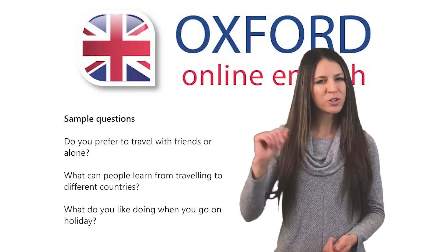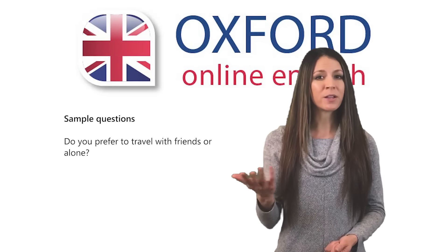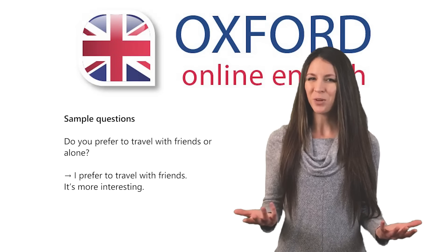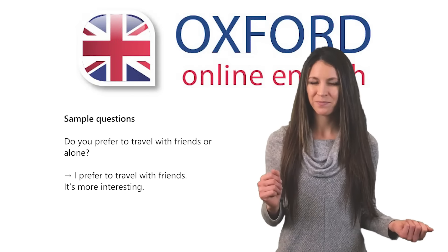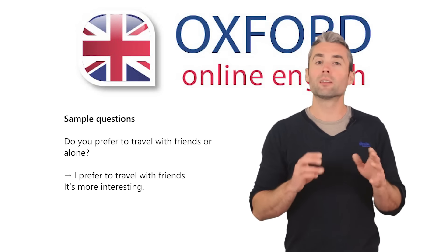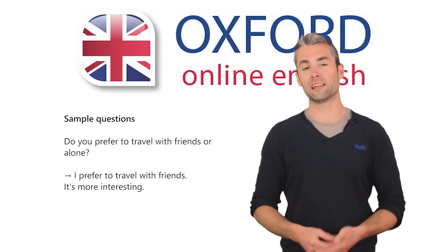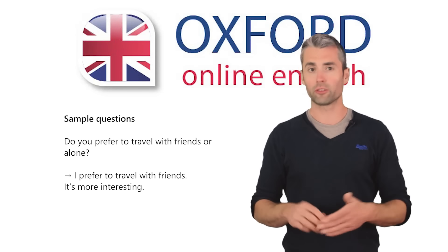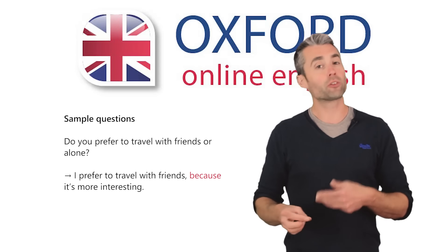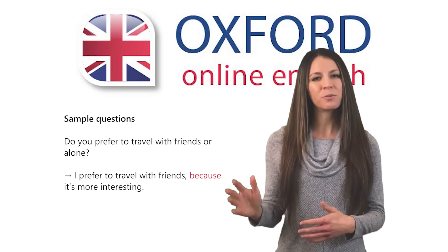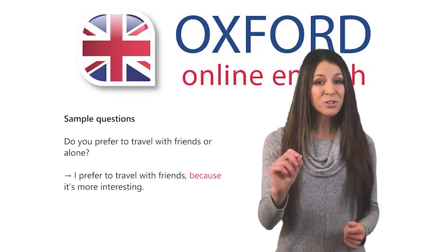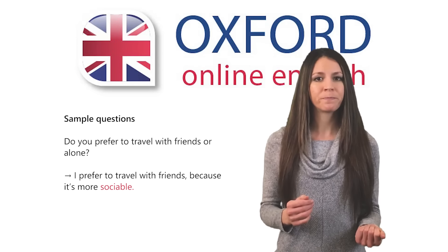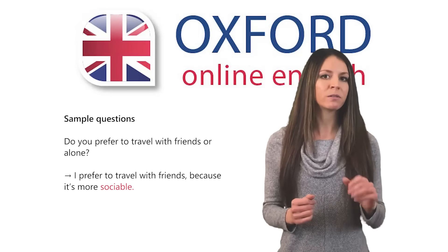Think — how could you answer these questions? Here's a sample answer for the first question: 'I prefer to travel with friends. It's more interesting.' Good answer? It's not terrible, but it could be better. This answer is just two short sentences and doesn't have many ideas. First, try to join your ideas together using words like 'but,' 'although,' or 'because.' For example: 'I prefer to travel with friends because it's more interesting.' Next, try to use more specific vocabulary — 'interesting' is very general. For example: 'I prefer to travel with friends because it's more sociable.'